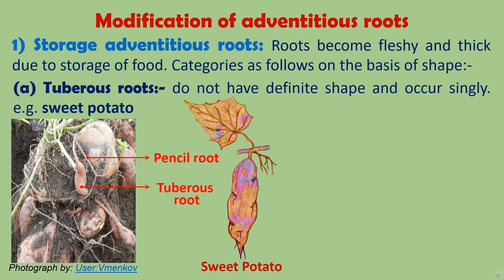But if the conditions are not favorable, these roots remain thick but do not become fleshy and look like a pencil. Therefore, they are called as pencil roots. But sometimes adventitious roots get broken during transplantation, and such roots do not convert into tuberous roots and remain fibrous, performing the function of absorption of water and minerals for the plant.